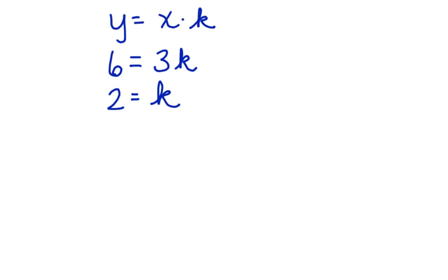Now something that you should always know about a direct variation equation is that it will always go through 0, 0, and we can use the constant as the slope.